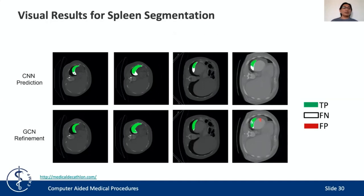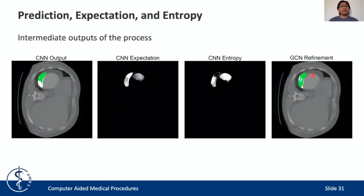These are the results for the spleen segmentation problem. Again, we can see in the first three columns how some false negatives are recovered with the GCN strategy. We can also see in the fourth column one small region of false positive that was generated after the refinement. Looking at the main components used to build the graph — the original CNN output, the expectation, and the entropy — we can see that the false positive region comes from a group of segmented voxels present in the expectation.